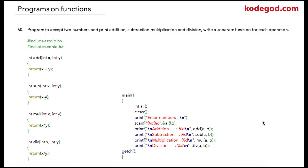Now that we have seen theory related to functions and parameterized functions, let us check a program where we take two numbers from the user and print addition, subtraction, multiplication, and division using functions. For each operation we write a separate function. The first function is named 'add' — it returns an integer and accepts two integer numbers as input parameters. Inside this function I am using the return keyword and returning x plus y, so whenever this function is called with two numbers it will add them and return an integer.